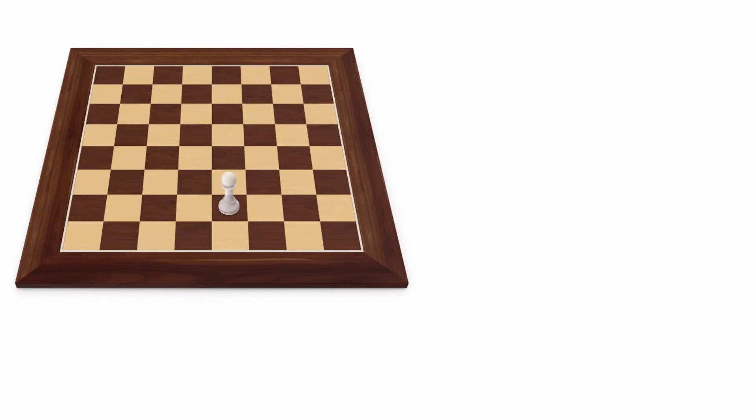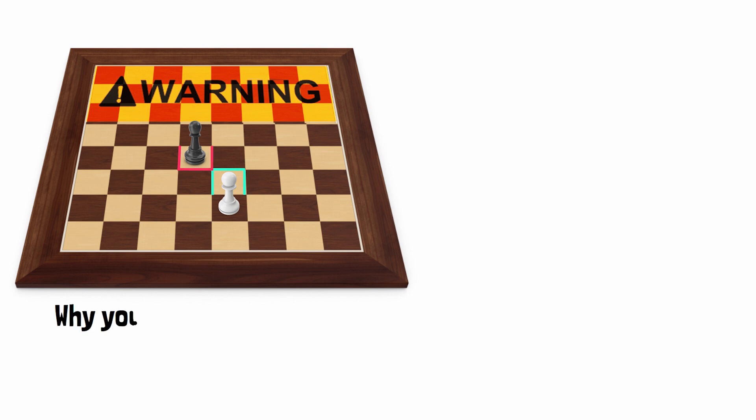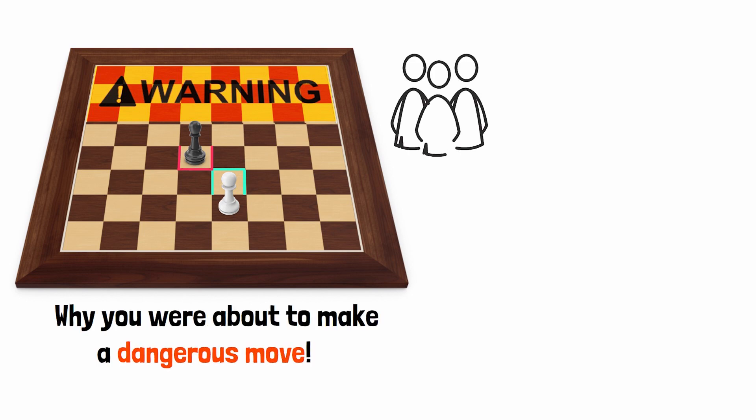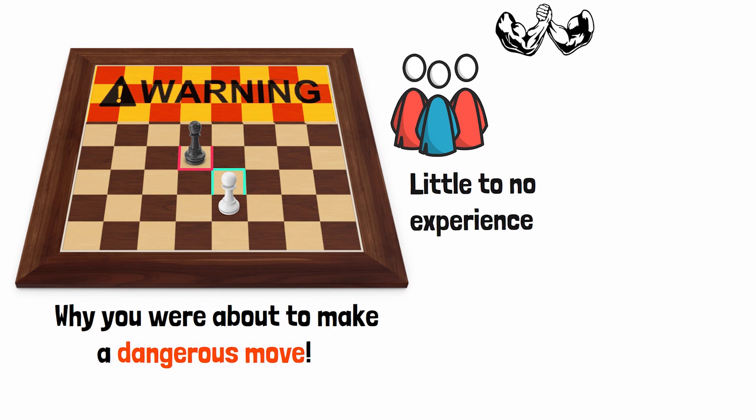So imagine you're playing a game of chess and every time you went to move a piece on the chessboard into a new position, the board would light up with a big warning sign. Imagine if the chessboard even gave you an explanation as to why you were about to make a dangerous move.